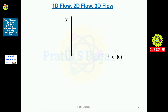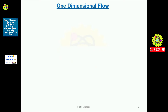Now suppose this is a y space coordinate, and when flow is along both x and y space coordinates, that type of flow is called as two-dimensional flow. This y space coordinate has a velocity component small v. Now suppose there is another z space coordinate, and when flow is along all three space coordinates — x, y, and z — that type of flow is called as three-dimensional flow, and the z space coordinate has velocity component small w.